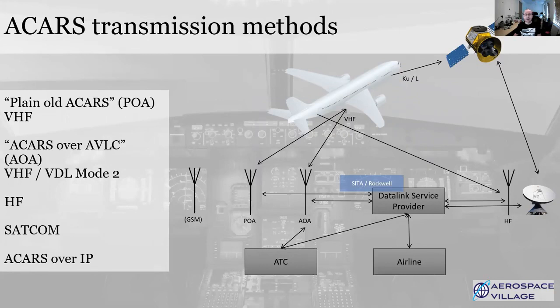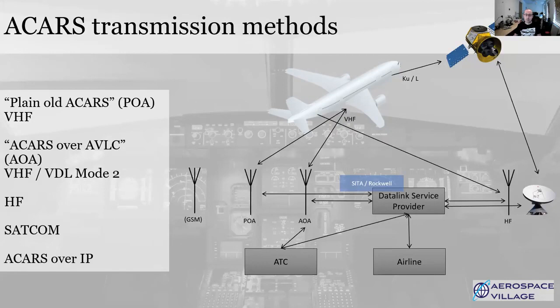A later evolution is ACARS over Aviation VHF Link Control, which is a terrible mashup of acronyms. This still uses VHF line-of-sight radios but on a different frequency to give a slightly higher bandwidth. For areas outside of direct ground contact like over the Atlantic, High Frequency Data Link — HFDL — can also be used but it's very slow. Nowadays we have SATCOM, which is increasingly the transmission mode of choice for many airlines and aircraft. There is some experimentation with using the cellular GSM networks as an ACARS platform too, but it's only in use with one European carrier to my knowledge.